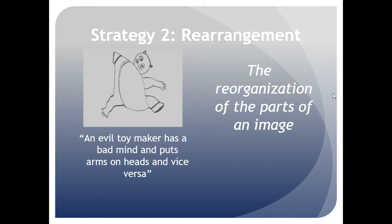In this drawing — just a contour line drawing — the student took parts of a toy and moved them around, and wrote a story about an evil toy maker who had a bad mind and put the arms and the heads in the wrong place.